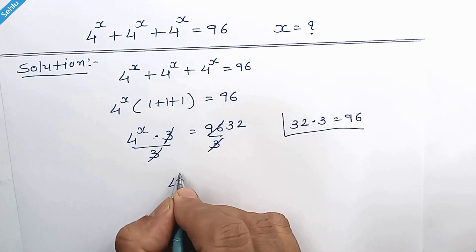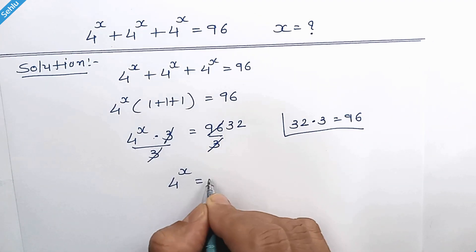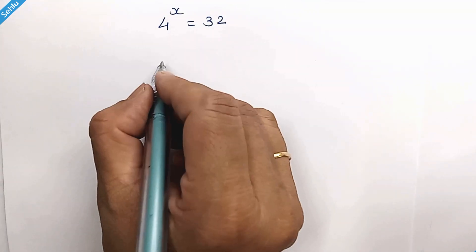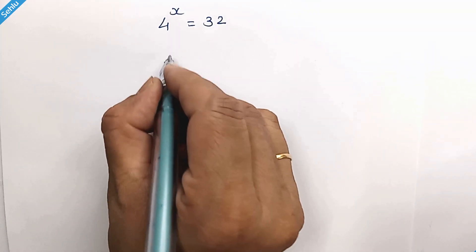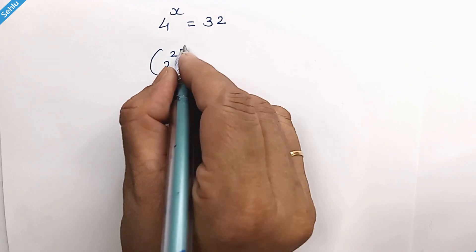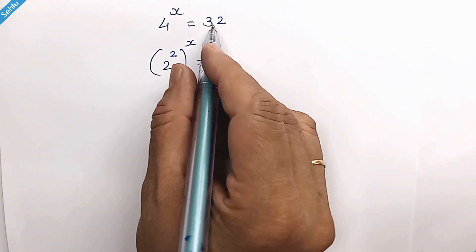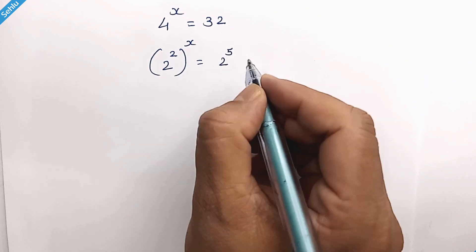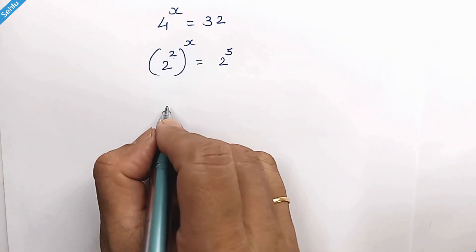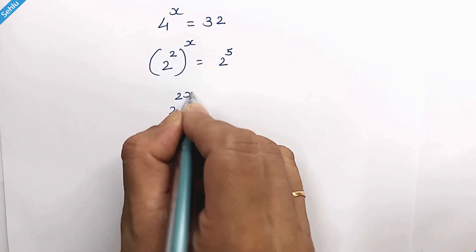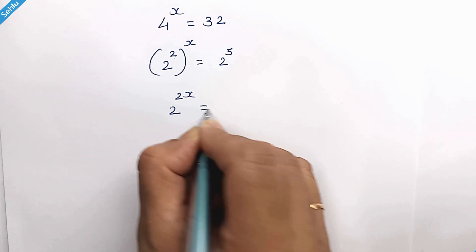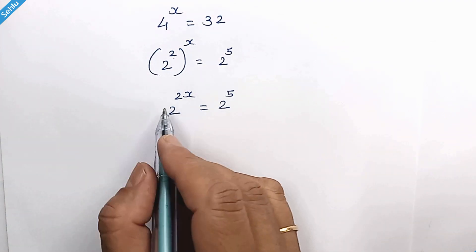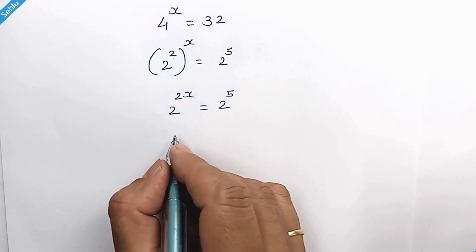So our next step is 4 to the power x is equal to 32. Now 4 is 2 squared, so we have 2 squared to the power x, and 32 is 2 to the power 5. The exponents multiply — it's the same base on both sides, so the exponents can be equated.